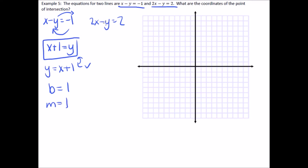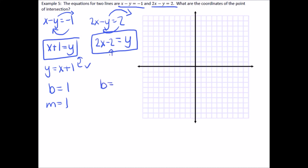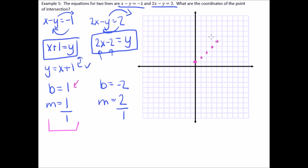For the second equation, it also has a negative y, so rearrange to get y equals 2x minus two. The y-intercept is negative two and the slope m is two. You can always write slopes over one: two over one, one over one. Now plot them — do the first one in purple, starting at the y-intercept of one, then apply slope: up one over one, up one over one, up one over one. When you have enough points, connect them.